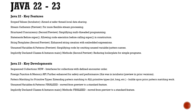Java 23 features include sequenced collections — a new interface for collections that encounter elements in a defined order. Foreign Function and Memory API provides enhanced performance and safety improvements. Pattern matching for primitive types such as 'long' was introduced, allowing all built-in primitive types to work with pattern matching, which was not previously possible. Unnamed variables and patterns from Java 22 have been finalized as a standard feature, and implicit class declarations have also been finalized in Java 23.